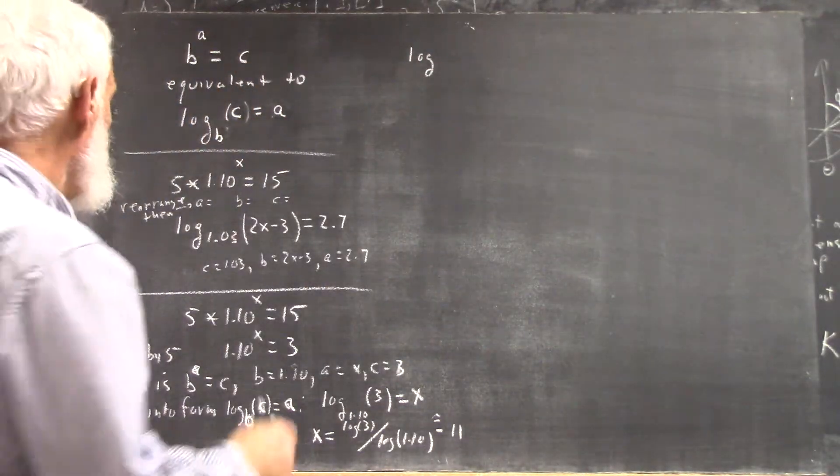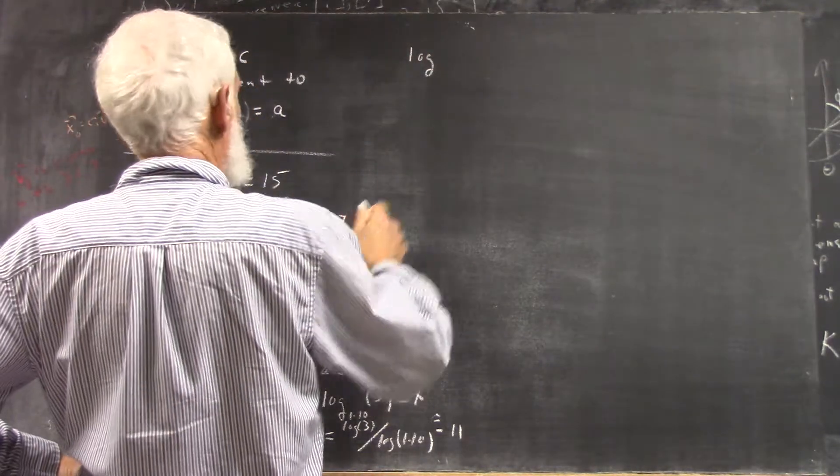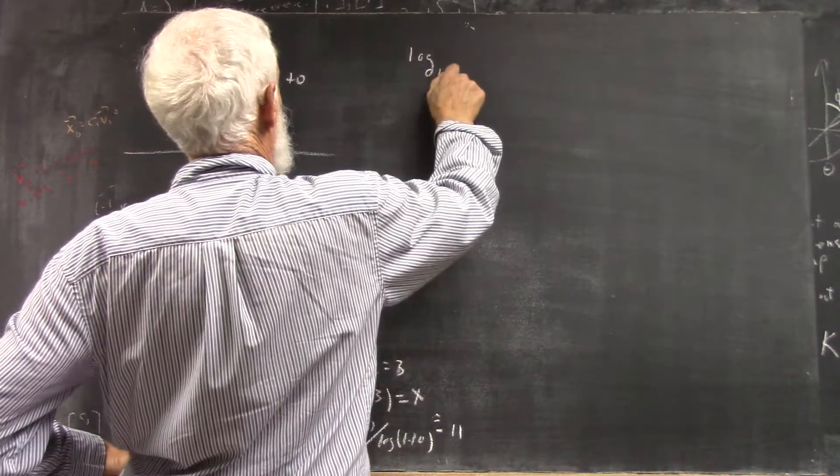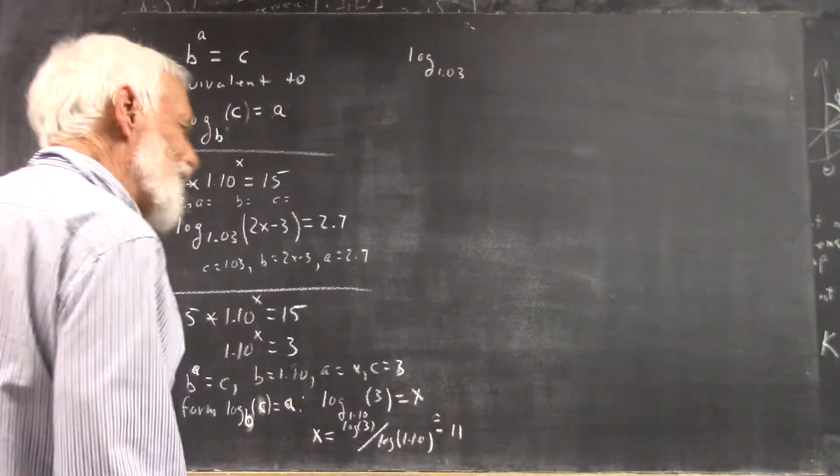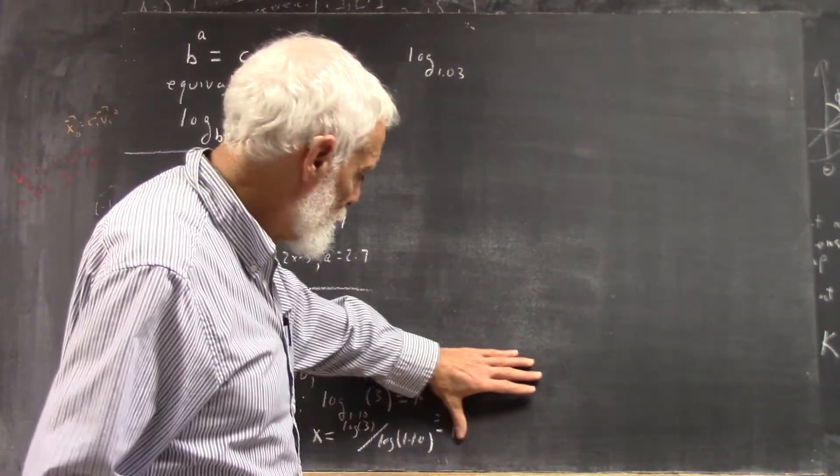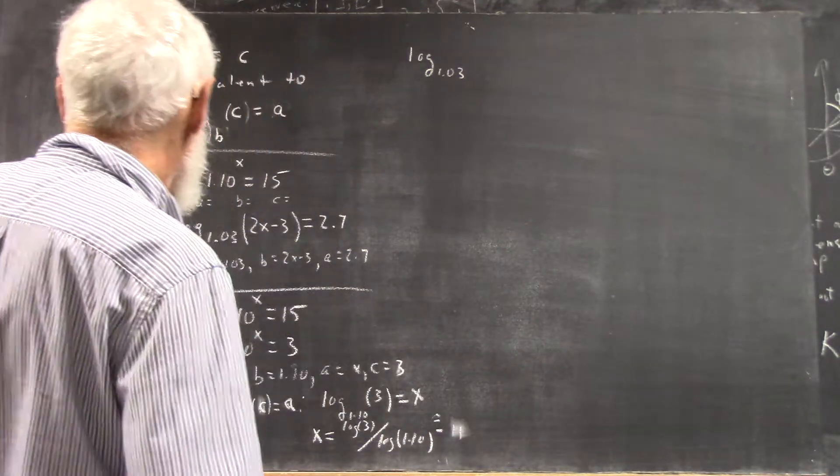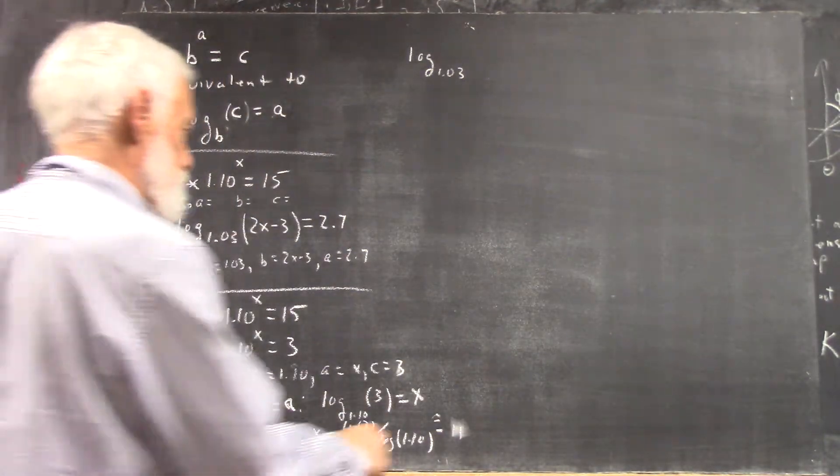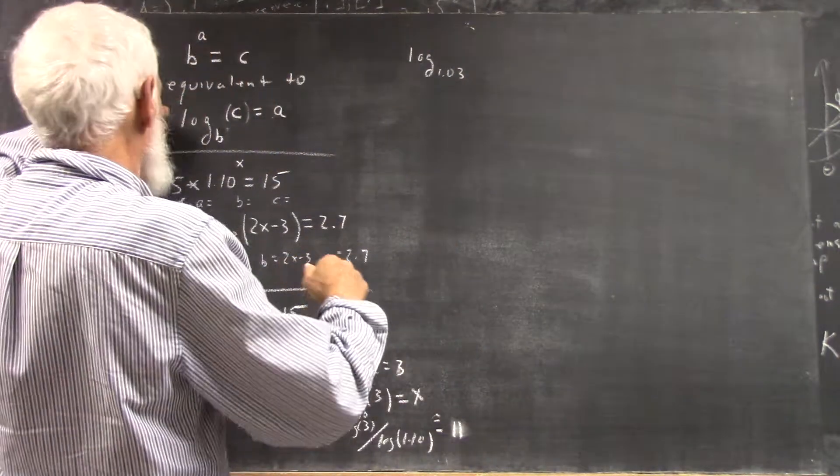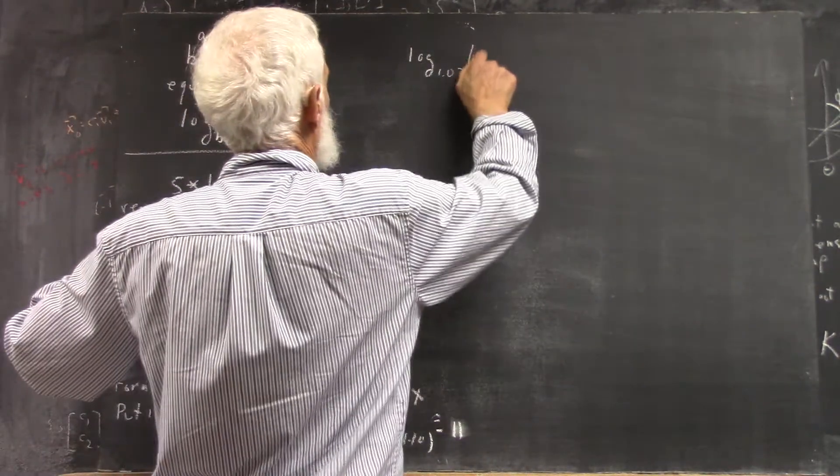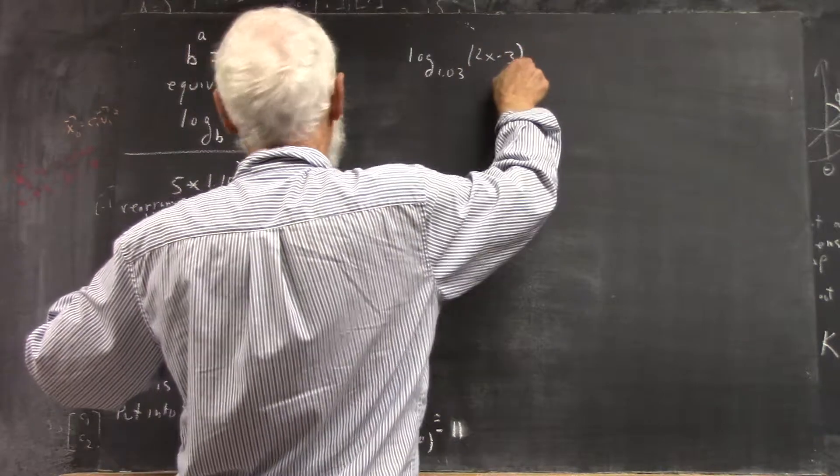Okay, so the other example is log base 1.03. I got 11 there because that's the answer to the second—no, it isn't. Okay, so we have log base 1.03 of 2x minus 3. Now there's a twist to this.